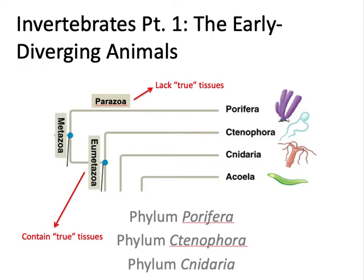Hi everyone! Today's recorded lecture is going to be on the first part of our invertebrates chapter. This first part covers the early diverging animals, or the animal lineages that appeared or evolved before the clade Bilateria. We're going to cover Porifera, Ctenophora, and Cnidaria in this lecture today.